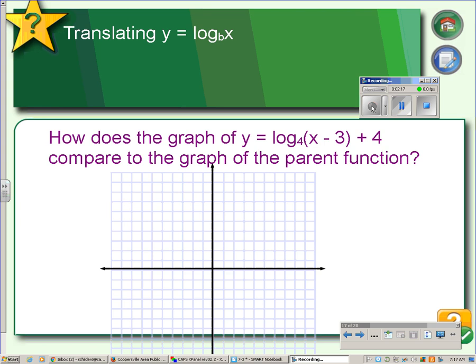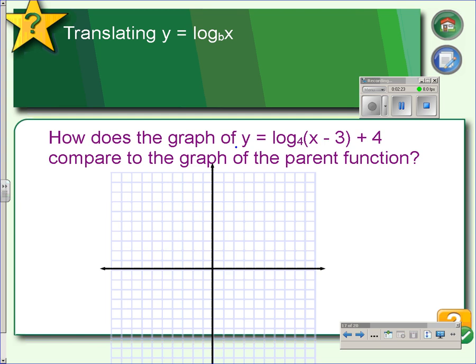If we wanted to graph a logarithmic function with translations, we would start by graphing the parent function. So writing that in exponential form, we would have 4 to the y equals x. Making the xy table, we would choose 0 and 1 for our y values and calculate the x values to be 1 and 4. We put these on as temporary points, because we're going to move them through the translation.